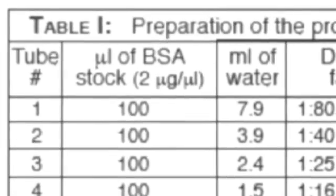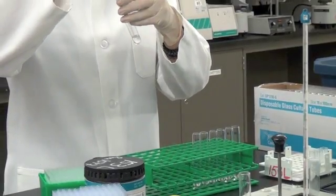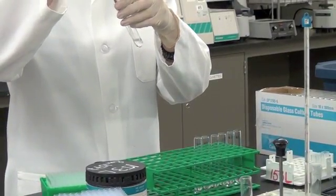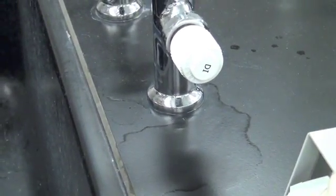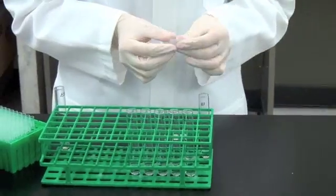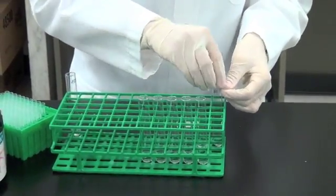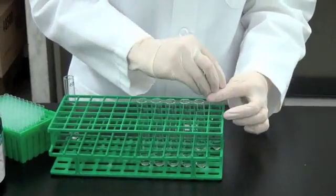In following the lab manual's table for the BSA standards, you will take the prescribed aliquots of the BSA stock solution and add it to deionized water. If the solution has a volume greater than half the capacity of the tube, don't forget to use parafilm to seal the top of the tube and mix by inversion.